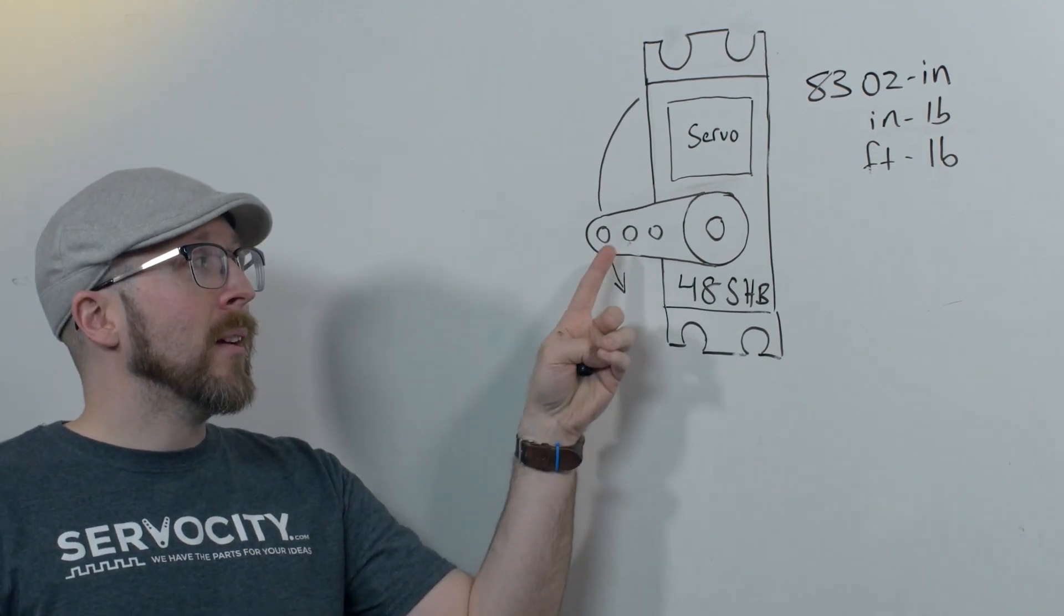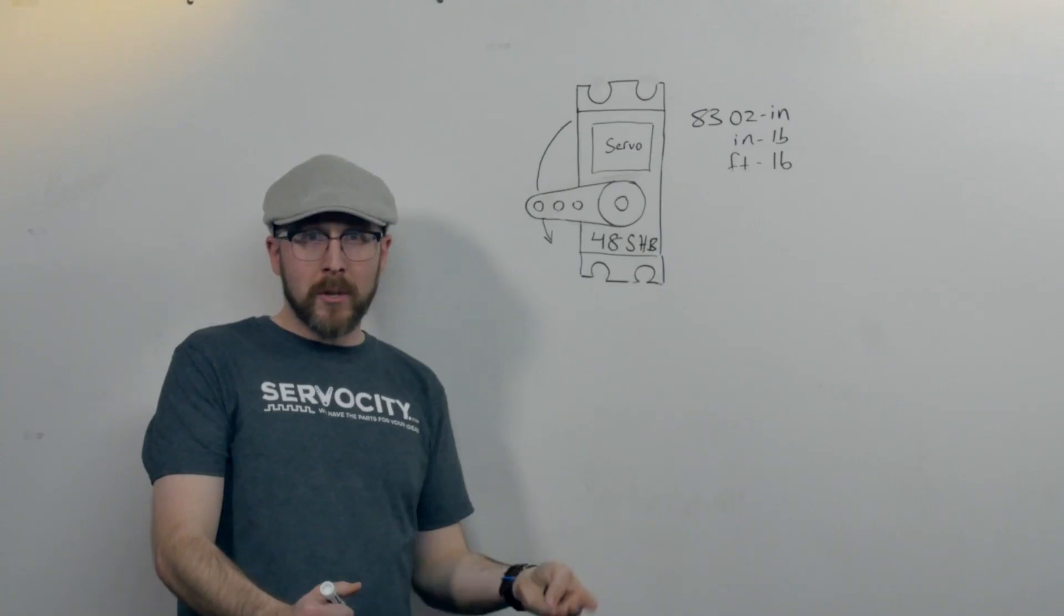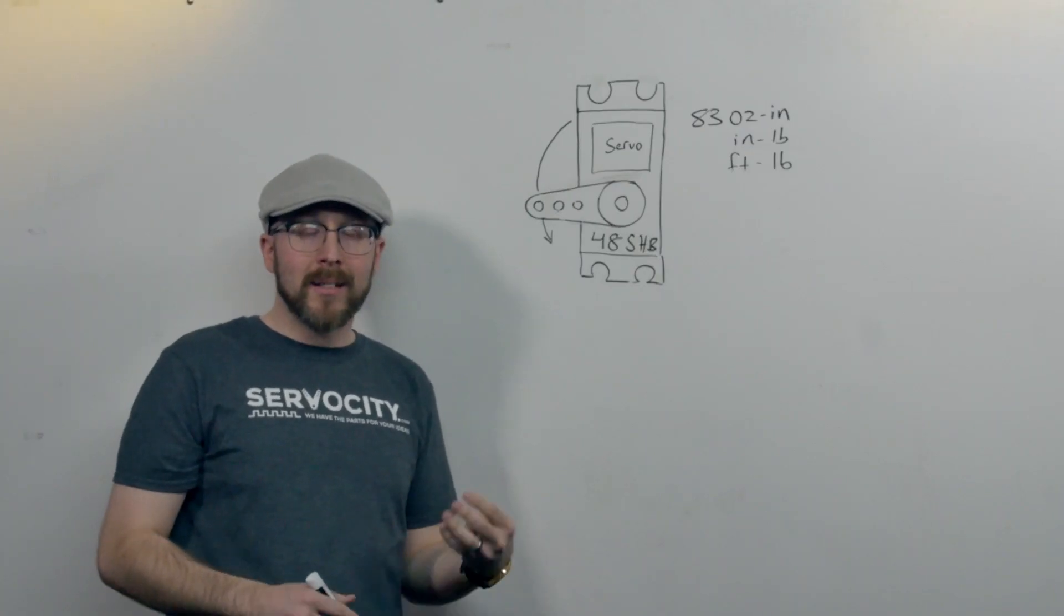If I go in half the distance to the center of rotation, to the half-inch mark, I can move twice as much load even though my servo still has the same amount of torque.